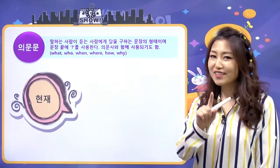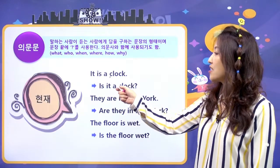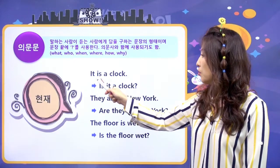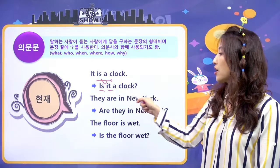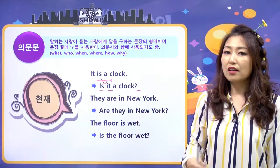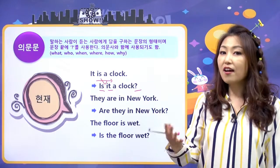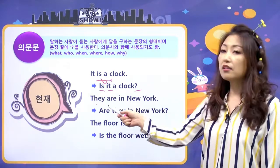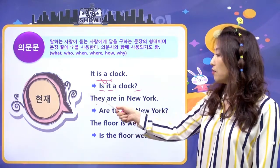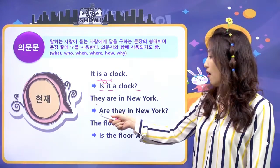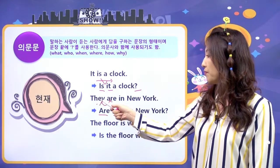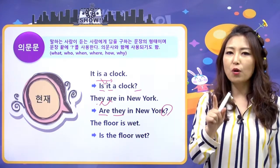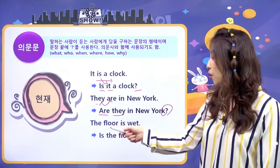현재 문장을 살펴볼게요. 'It is a clock', 그것은 시계야를 의문문으로 만들면 'Is it a clock?' 하고 물음표 붙이고 끝에 올려주면 돼요. 두 번째로 'They are in New York', 그들은 뉴욕에 있어, 이걸 의문문으로 만들면 두 개 위치만 바꿔서 'Are they in New York?' 하고 물음표 붙이면 되죠. 'The floor is wet', 이거도 두 개 위치만 변경해서 'Is the floor wet?' 이렇게 하면 돼요.